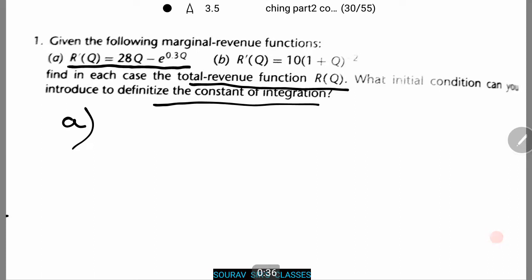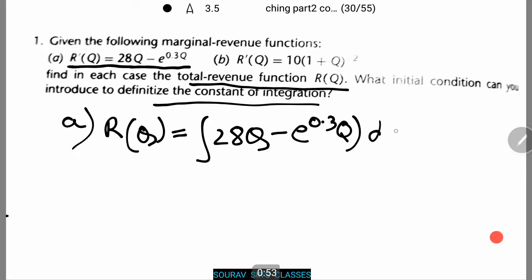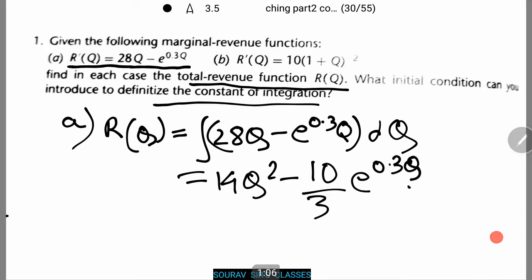To do this we need to integrate the function that has been given to us. That is R(Q) equals integration of 28Q minus e to power 0.3Q dQ. That comes to 14Q square minus 10 by 3 e to power 0.3Q plus C.